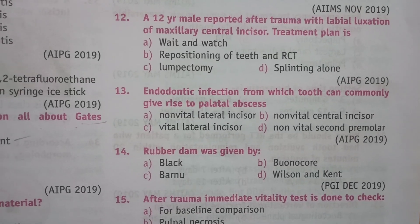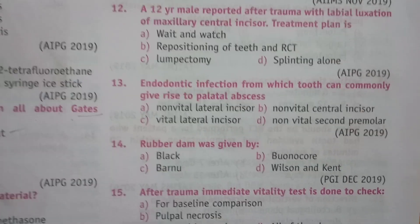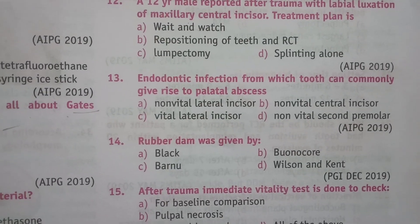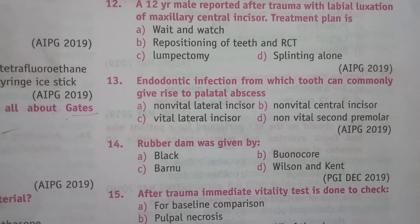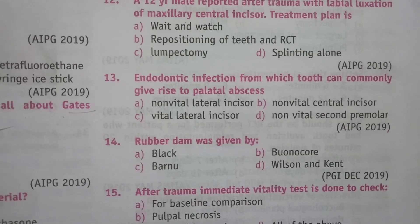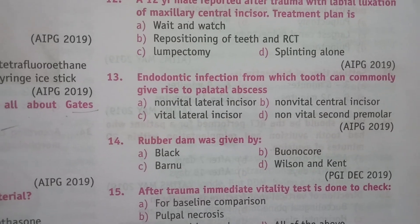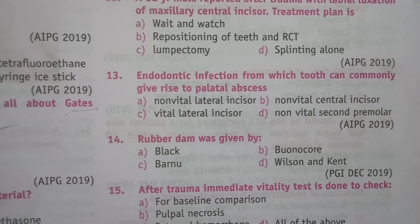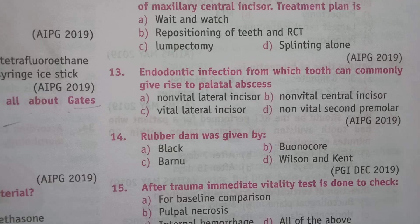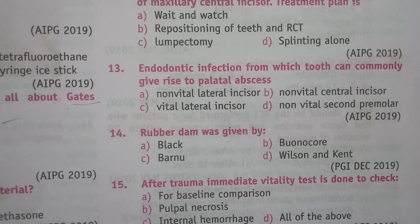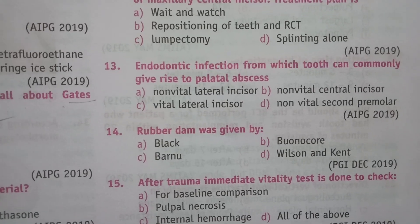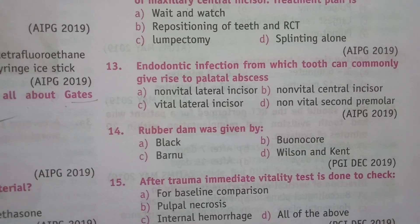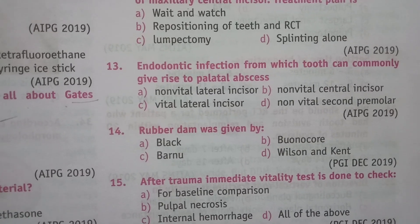Next question: rubber dam was given by whom? The answer is Option C, Barnum.